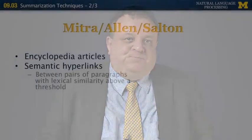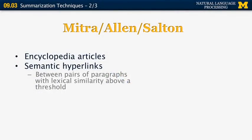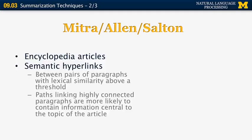We're going to continue with some more papers on summarization from the 90s. The first one is by Mitra et al., a group from Cornell University. It was the first paper to use graph-based summarization techniques, using for the first time a corpus of encyclopedia articles. The idea was to represent each sentence as a node in a graph and connect nodes using semantic hyperlinks when the content of sentences overlaps. Overlap is defined as lexical similarity above a threshold — for example, multiple words in common. The idea is that paths linking highly connected paragraphs are more likely to contain information central to the topic.